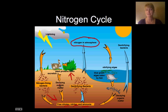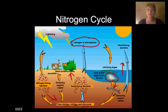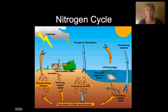The animals excrete, producing decaying organic matter which puts nitrogen back into the soil. Also when living things decay, that puts nitrogen back into the soil. The bacteria also give off some nitrogen to the atmosphere, and so we see this continuous nitrogen cycle throughout our environment.